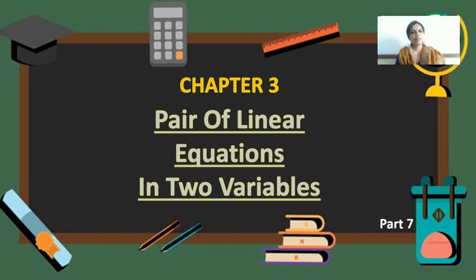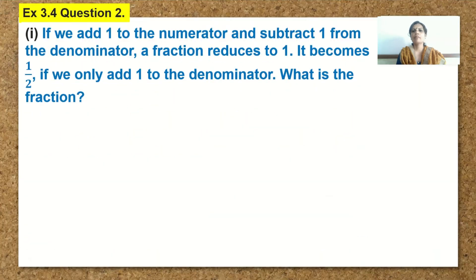Hello students, from Pair of Linear Equations in Two Variables. We started with the elimination method and completed question number 1 of exercise 3.4. Moving ahead, this is question number 2 from exercise 3.4. The question is: if we add 1 to the numerator and subtract 1 from the denominator, the fraction reduces to 1. It becomes 1 by 2 if we only add 1 to the denominator. What is the fraction?